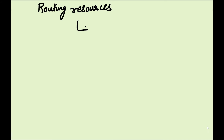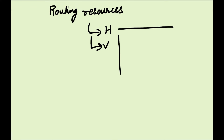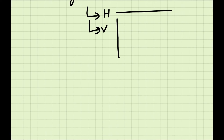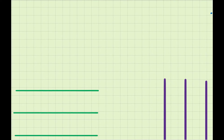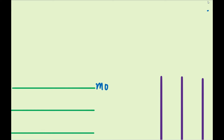There are mainly two types of routing resources, broadly classified as horizontal and vertical. In the horizontal direction you can have metal layers going over the design, or in the vertical fashion. The naming convention for metal layers can vary depending on the technology and the type of project. For example, horizontal could start with M0, then vertical will be M1, then M2, M3, M4, and M5.